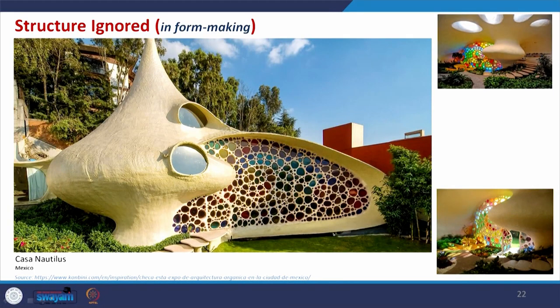The last example in this category is a form of a nautilus — a resort in Mexico. Looking at it, we cannot really determine the structure. It is definitely a shell structure derived from nature. The interior space creation is an architectural or organic form that comes first. Structure is again ignored in form making, and definitely in order to make it stable, whatever was required was considered.